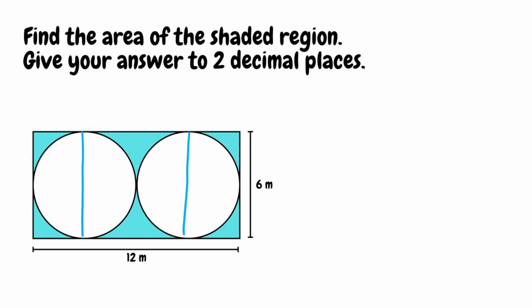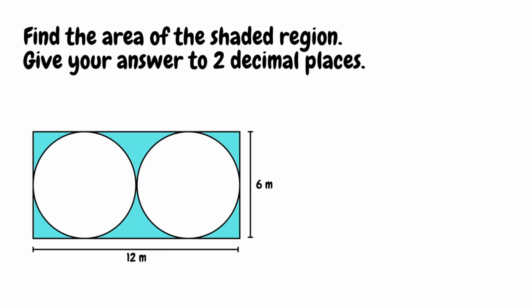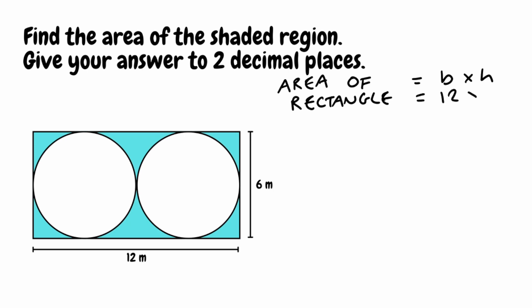That checks out because if we take the diameter horizontally from one circle to the other, it goes from the left side of the rectangle all the way to the right. Adding the two diameters together: 6 add 6 gives us the rectangle dimension of 12. So both circles have a diameter of 6 metres. For the area of the rectangle we do base times height: 12 multiplied by 6 gives us 72.